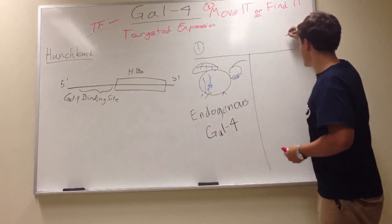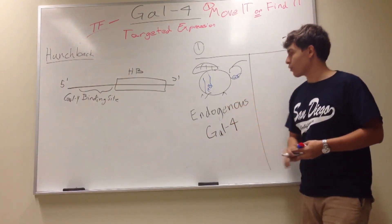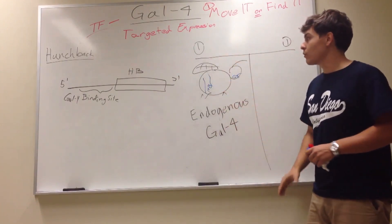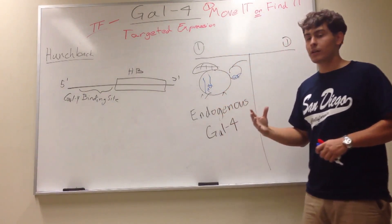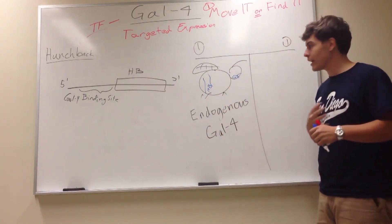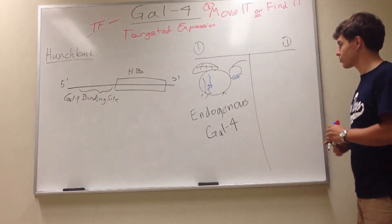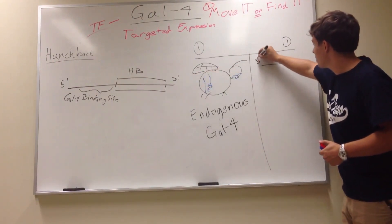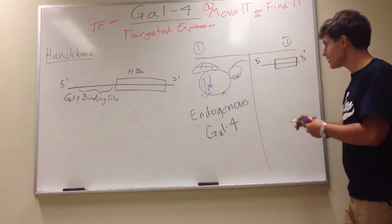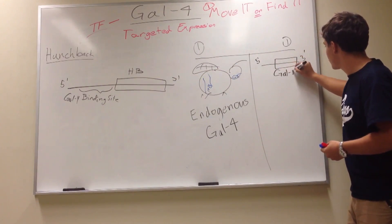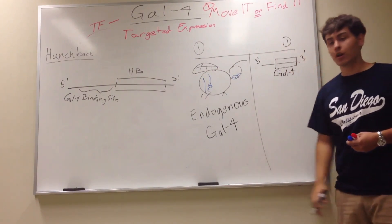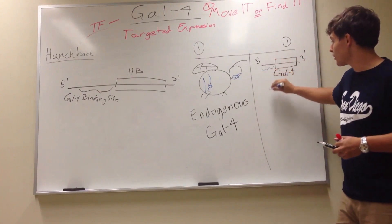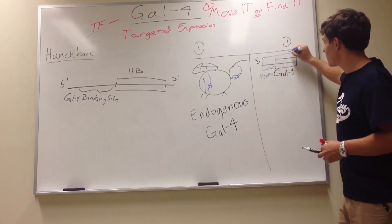However, the other way is: what if we don't have endogenous GAL4 and we want to control where it's expressed? In this type of targeted expression, we're controlling hunchback by producing GAL4 ourselves. What we can do is, along with our construct containing the GAL4 binding site, put in a secondary construct that produces GAL4 — a coding region for GAL4 in another construct. Then the way to get it expressed is to add enhancers or some type of promoter that will drive the expression of GAL4.